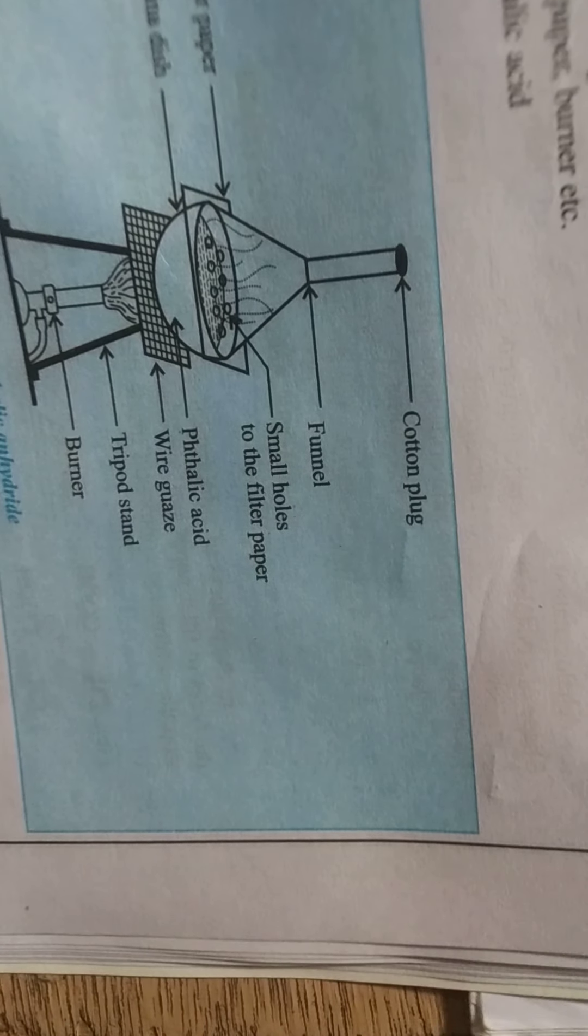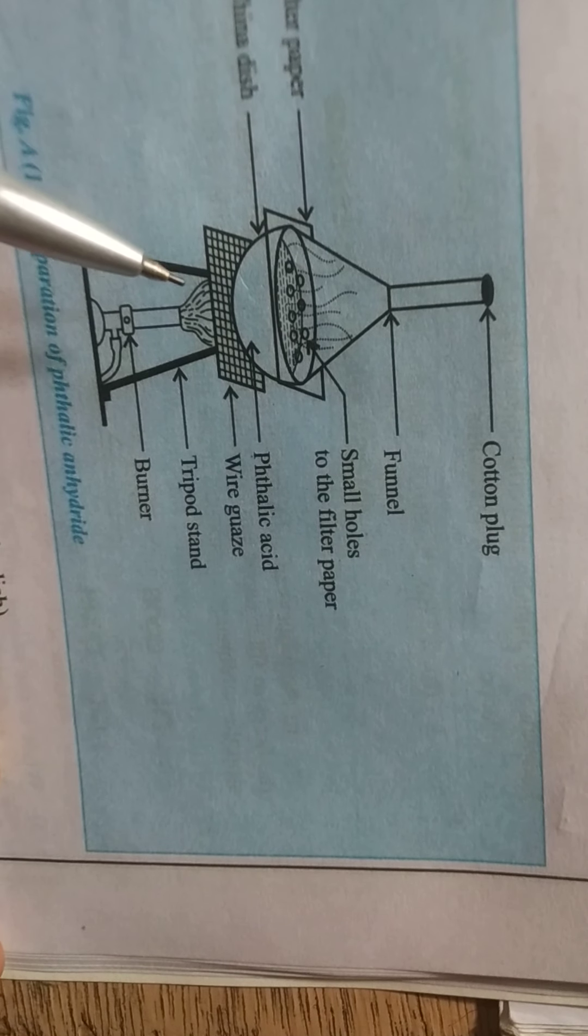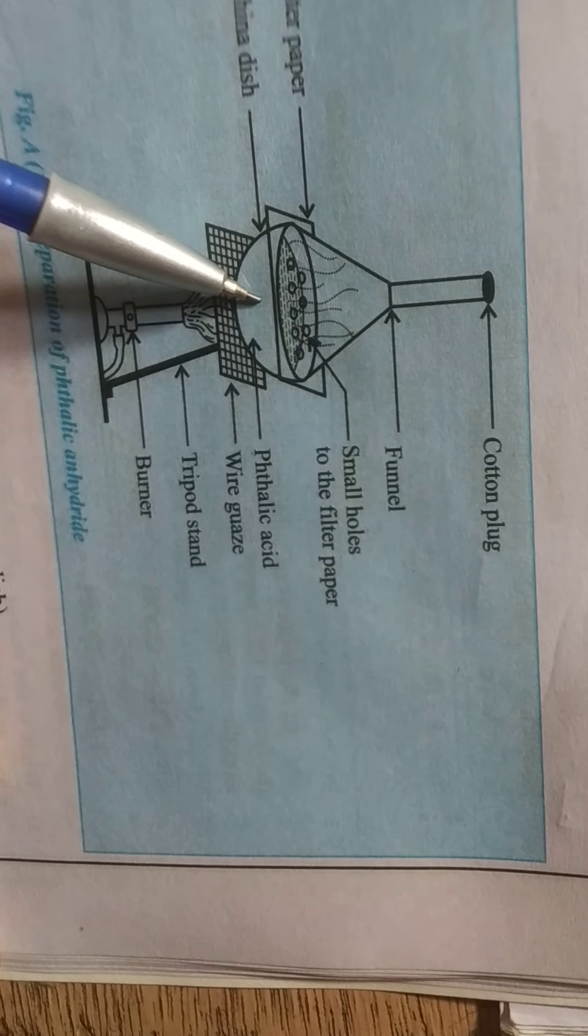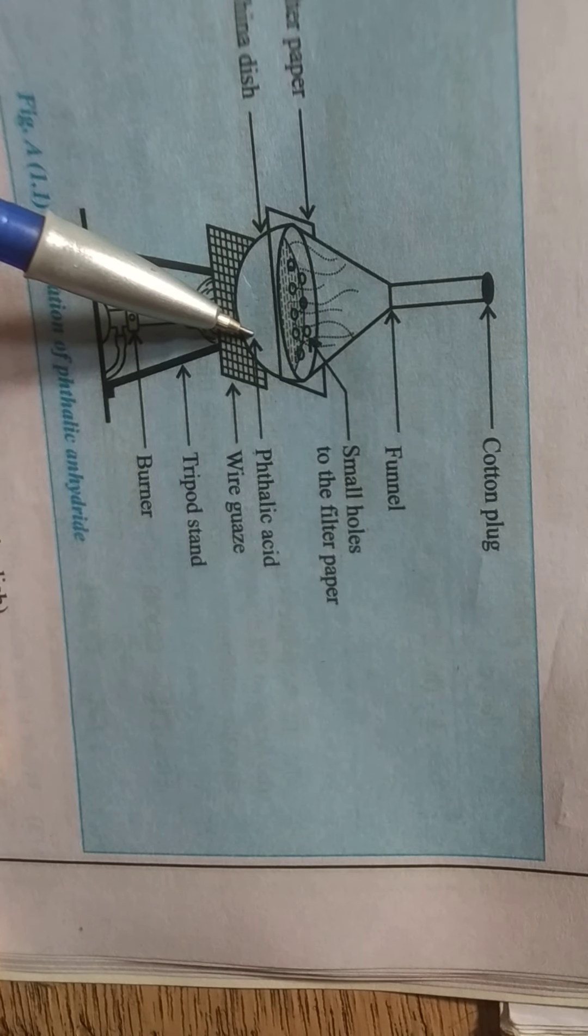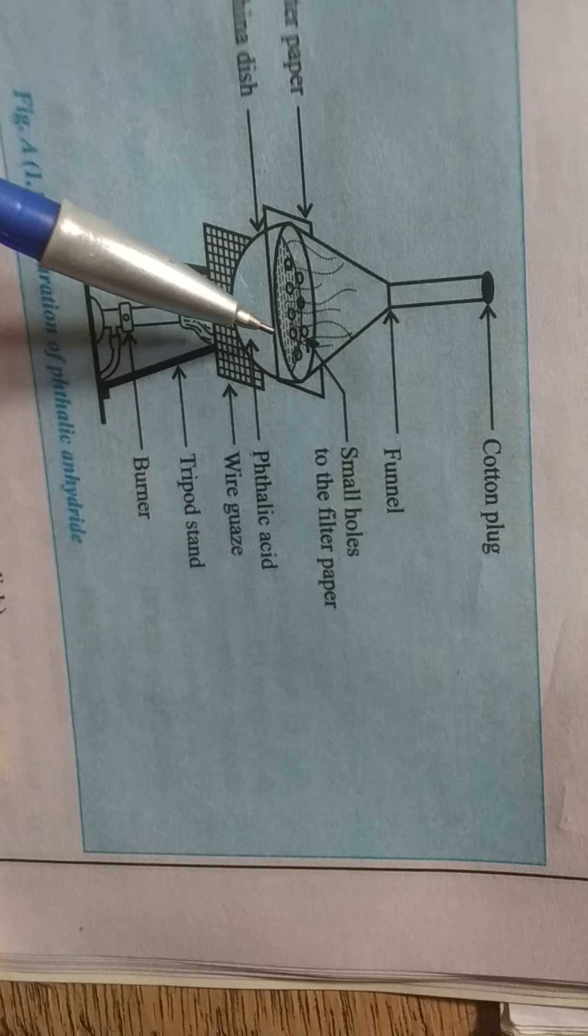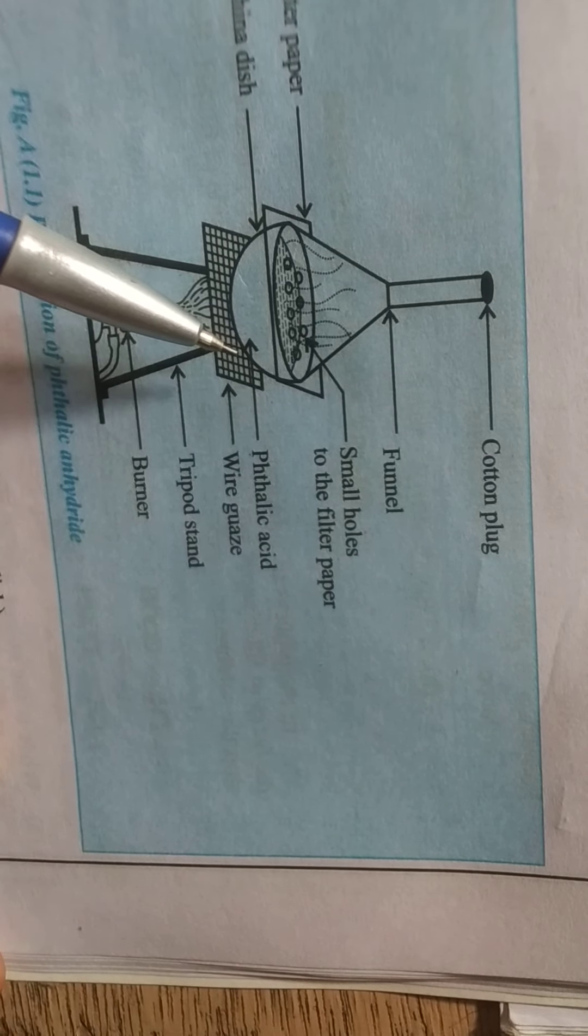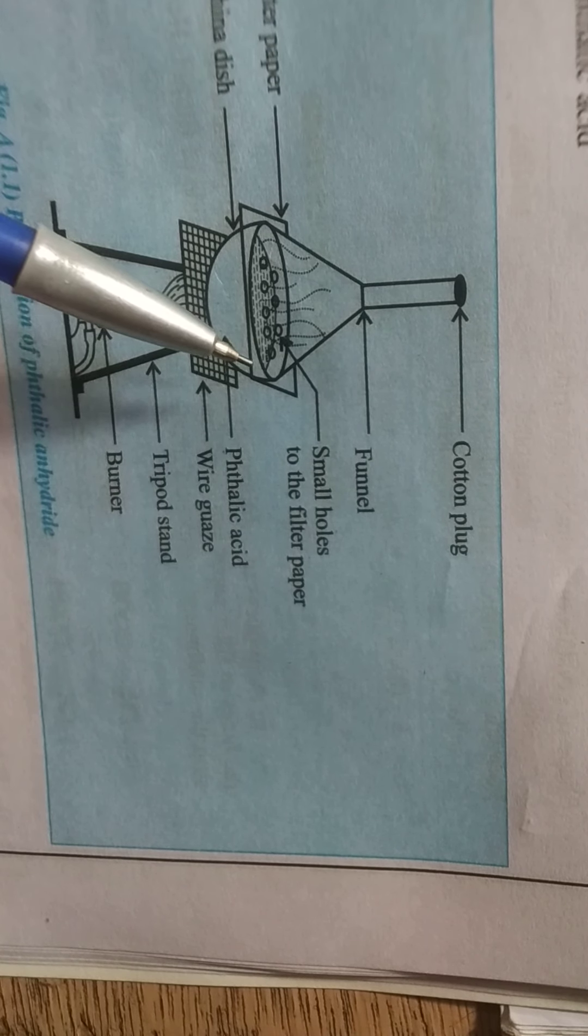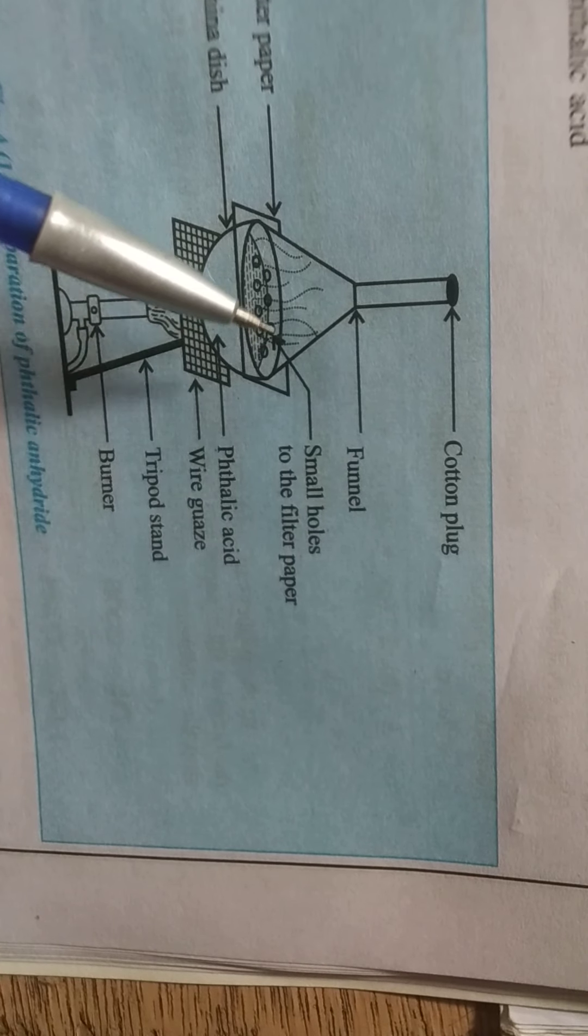We will use the process of sublimation. In sublimation, solid form of phthalic acid in china dish is slowly heated and evaporating dish shows that dehydration takes place. Fumes of phthalic anhydride are obtained which are later condensed to obtain the crystals of phthalic anhydride.